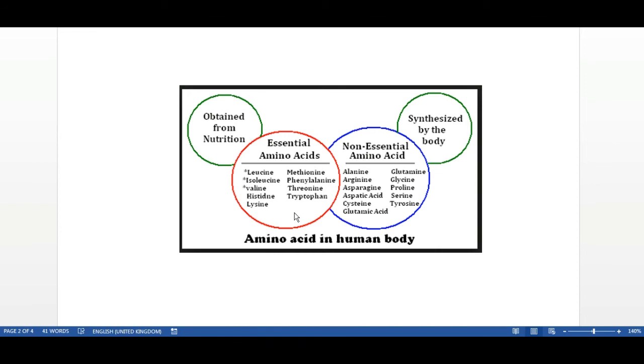However, there are nine amino acids, which are listed here in the red circle, that you can only obtain from food and nutrition. Your body cannot produce these. It cannot synthesize these proteins. They have to be absorbed from external sources.